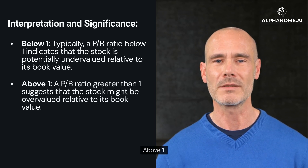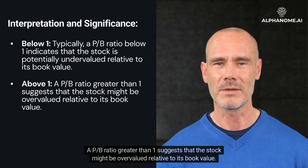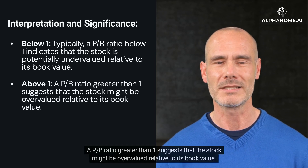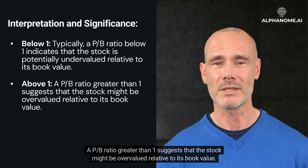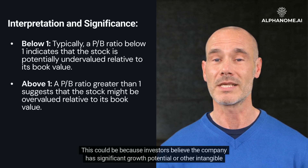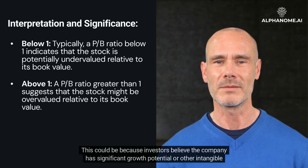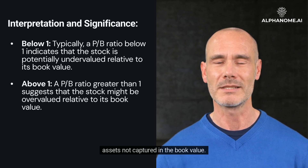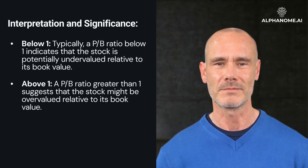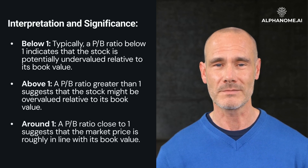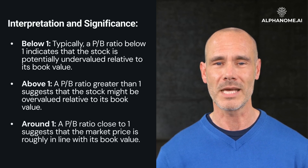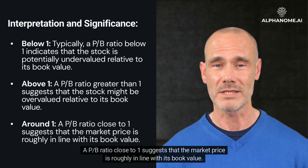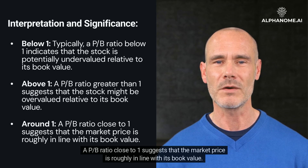Above 1: a P/B Ratio greater than 1 suggests that the stock might be overvalued relative to its book value. This could be because investors believe the company has significant growth potential or other intangible assets not captured in the book value. Around 1: a P/B Ratio close to 1 suggests that the market price is roughly in line with its book value.